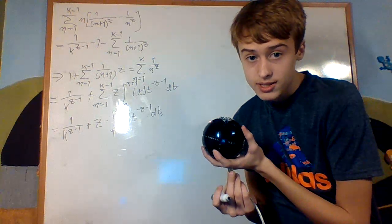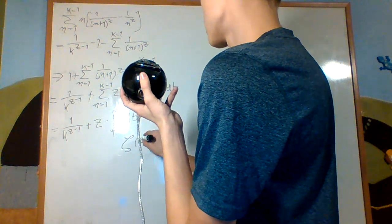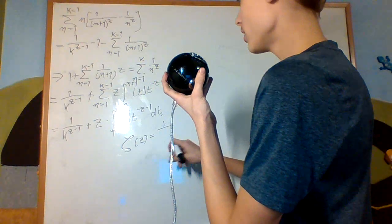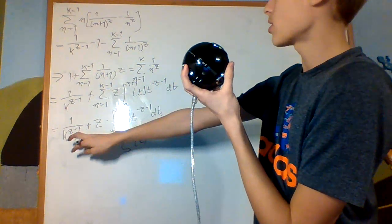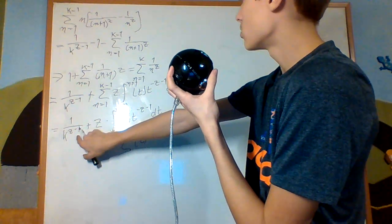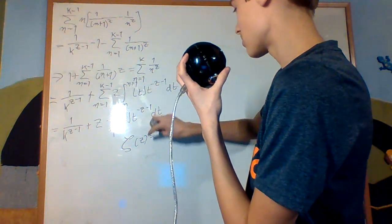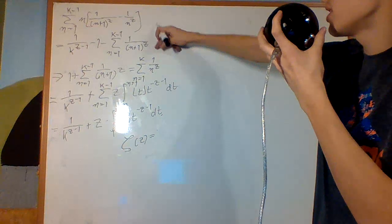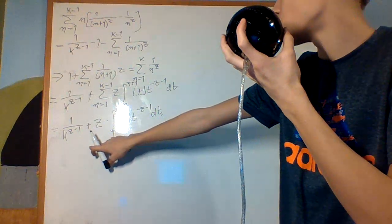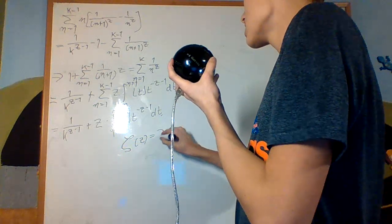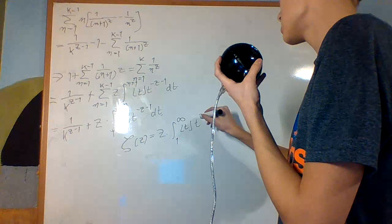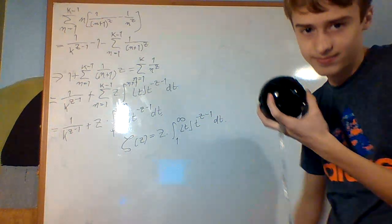We can now see that the Riemann zeta function zeta(z), for the real part of z greater than 1, equals — as k goes to infinity, 1 over k^(z-1) goes to 0, so the zeta function equals z times the integral from 1 to infinity of floor(t) times t^(-z-1) dt.